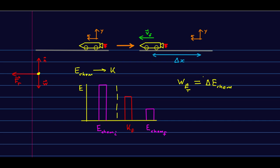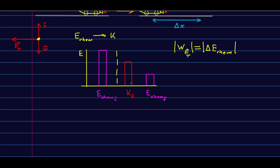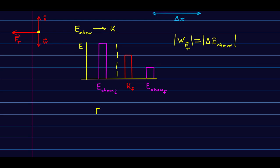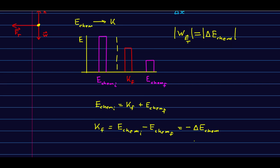Okay, and I'll just say that for now we're only going to think about the sizes of these, so we don't have to worry about positives and negatives. Well, where does that get us? Well, our conservation of energy is simply that E chem initial is Kf plus E chem final. And so Kf is E chem initial minus E chem final, or in other words, negative delta E chem.